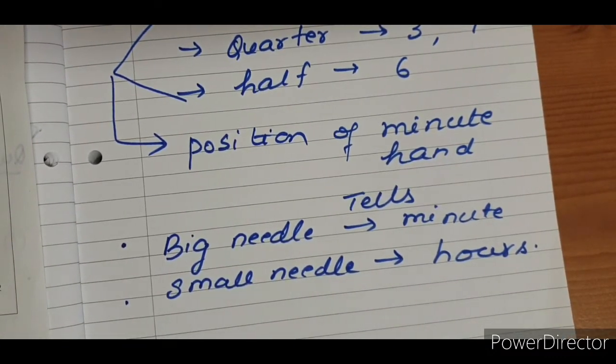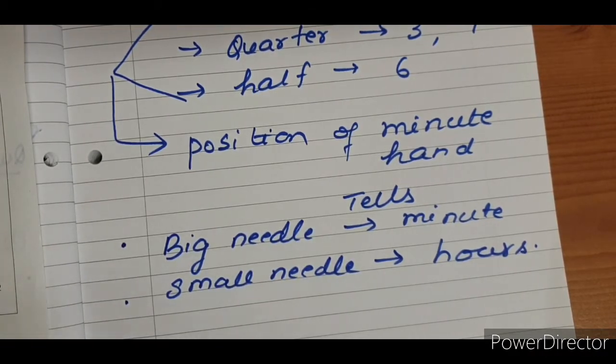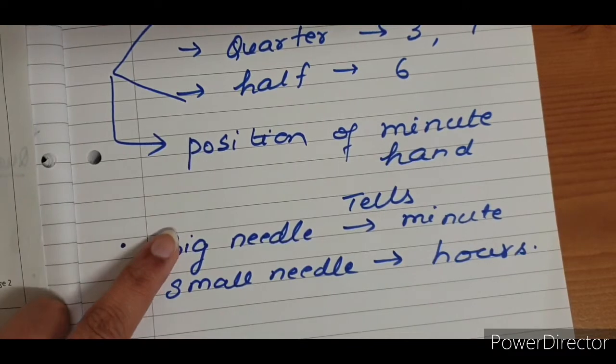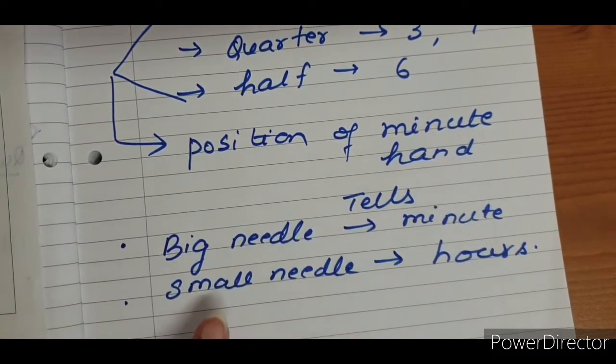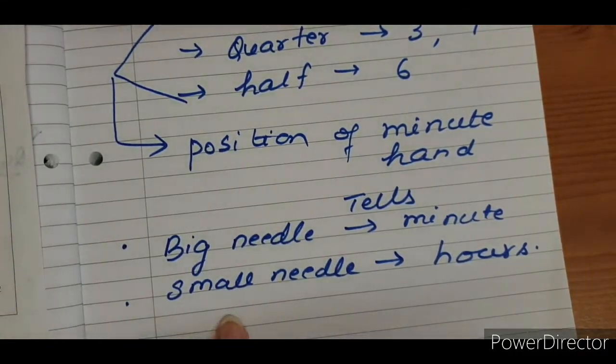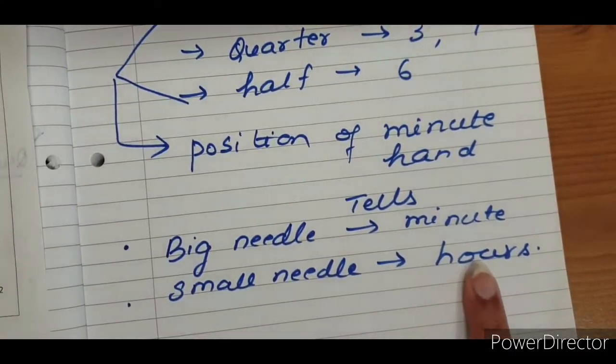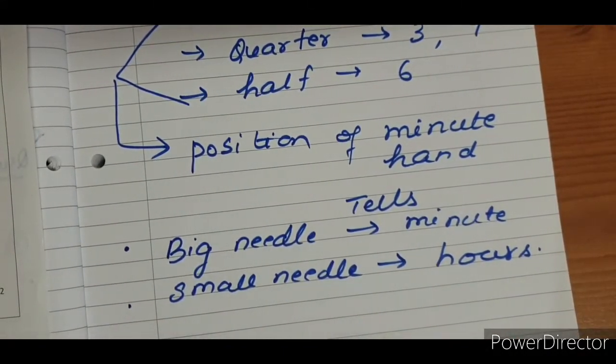So, whenever we have to read or write time, there are two parts of the time. Minutes and hours. So, we use the position of big needle to read minutes of the time. And we use the position of small needle to check the hours.